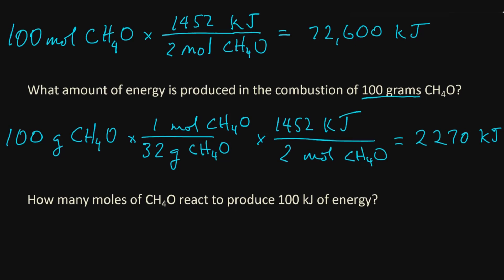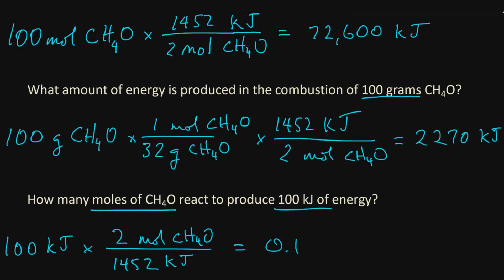Okay, in the next problem, we're given kilojoules and asked for how many moles of CH4O must react to produce that amount, 100 kilojoules. So here we multiply it by the relationship of kilojoules on the bottom and moles on top. So for every 2 moles, we still have that same relationship, 1,452 kilojoules. And so the combustion of 0.14 moles of CH4O produces 100 kilojoules.